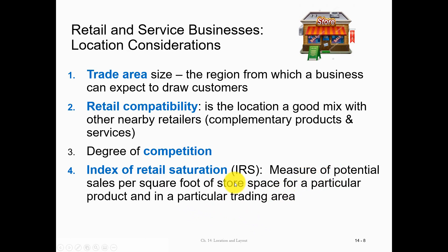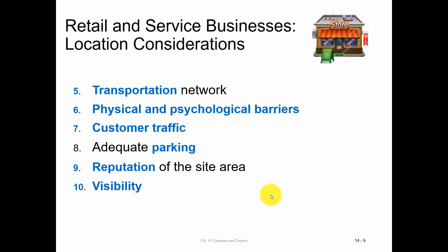Index of retail saturation is the measure of potential sales per square foot of store space for a particular product in a particular trading area — that's not going to be on the test. Visibility is also a location consideration. In the gold souk, the shops easiest to find are on the street level, or at the junction of multiple streets converging. Compare that to a shop you have to navigate through a maze to reach — visibility matters a lot.